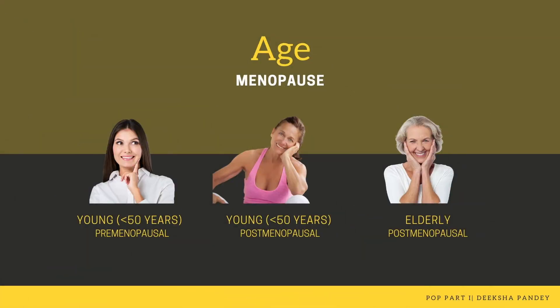The first important thing is age and menopausal status. According to these two, women can be divided into three groups from the management point of view. Young means less than 50 years of age who have not yet attained menopause. Then there can be a group who is around 50 but has attained menopause a few years ago. And there is a third group where the patient is 55 or beyond and has naturally attained menopause. The clinical presentation, approach, and management for all three groups will differ.